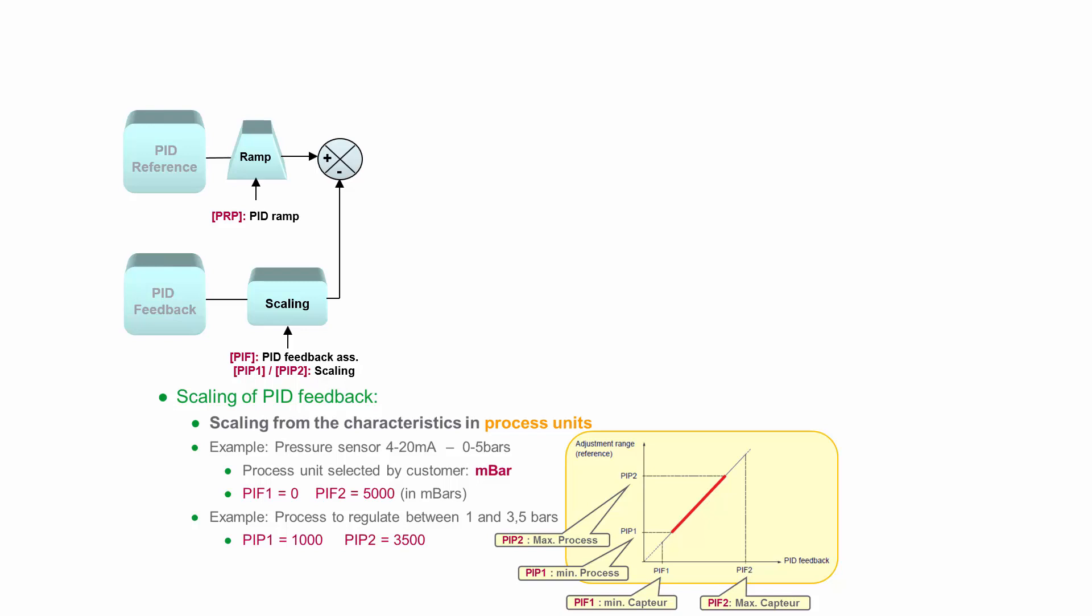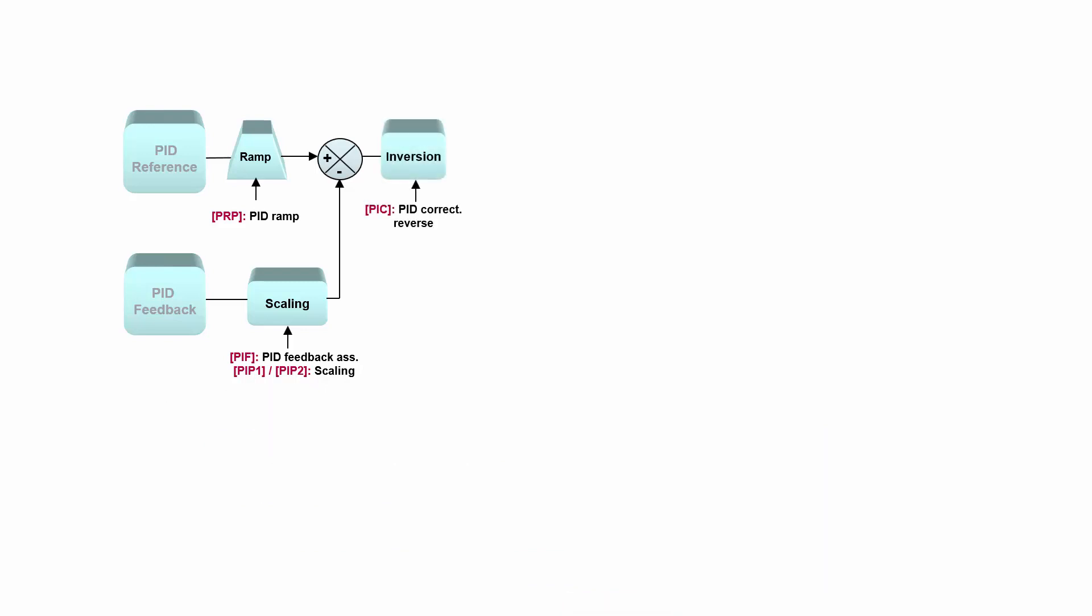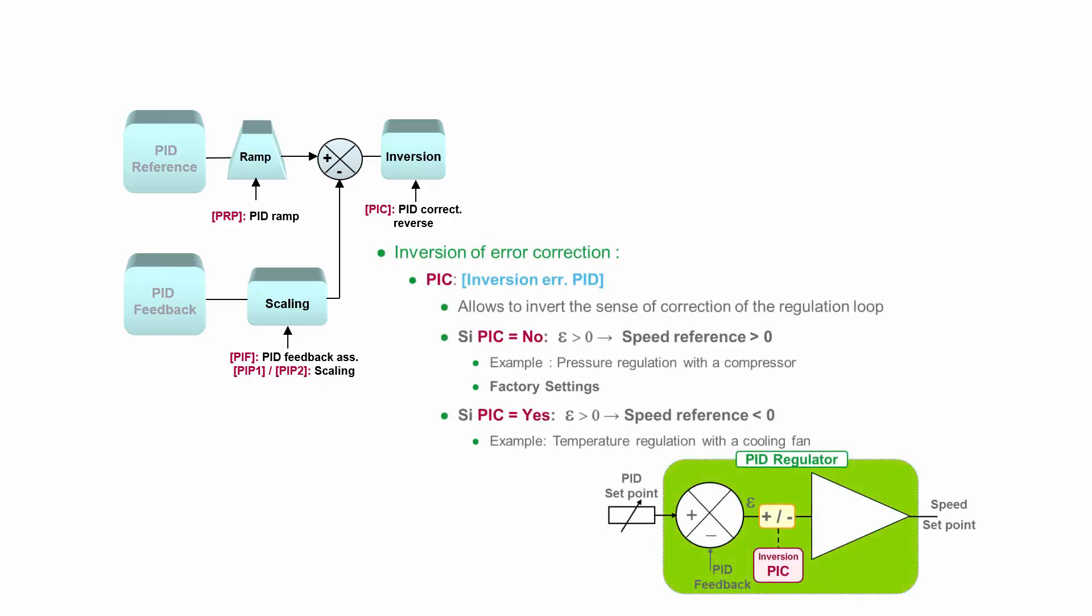After that we have error correction, and the first step of error correction is possibility to make inversion. Why would we need inversion? For example, if you have some compressor which is regulating pressure, then you will not inverse error correction. But for example, if you have some cooling application where you need to increase the speed of the fan if the temperature goes higher, then you need to inverse the error correction.